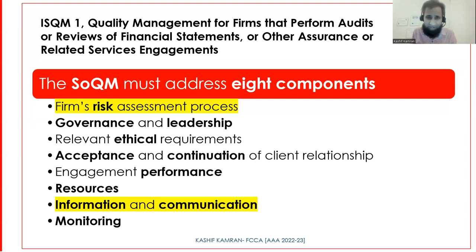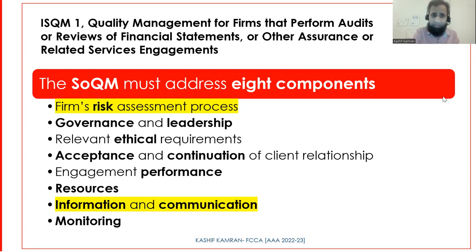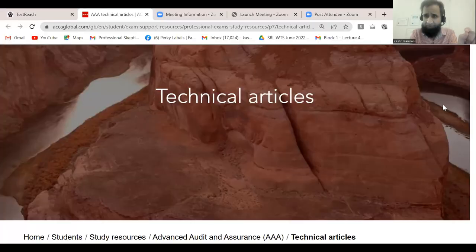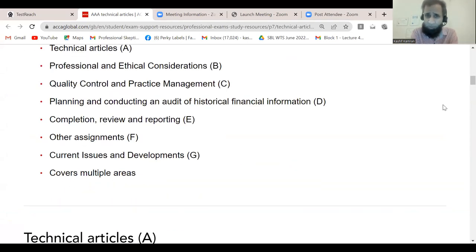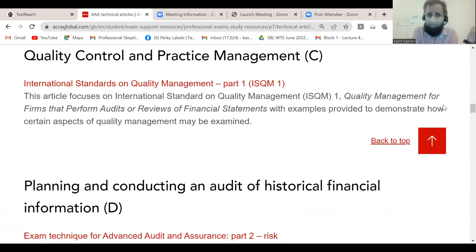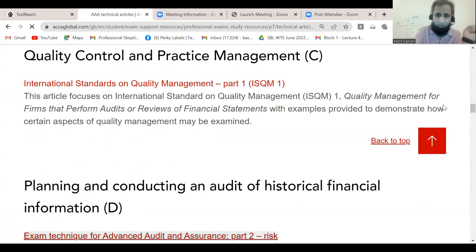Now let's study each one of the eight components which define the SOQM. I'll interact with each component and try to make relevance to exam papers, looking at how questions used to come previously with quality control terminology and how things will change from September exams. This article is available on the ACCA website under technical articles for Triple A, in syllabus area C: quality control and practice management. You'll find the article titled 'International Standards on Quality Management Part One.'